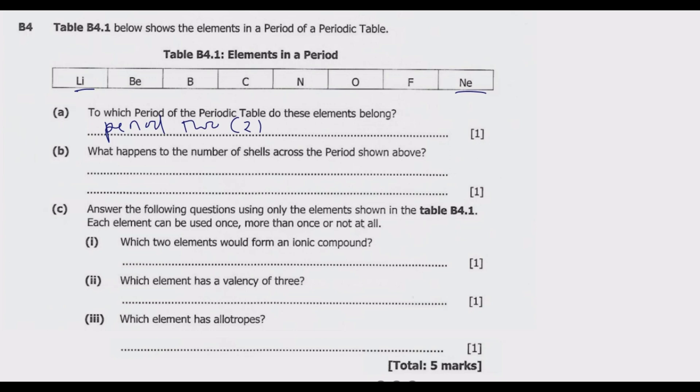Then part B: what happens to the number of shells across the period shown above? The number of shells determines the period in which a given element belongs. So in this case, the number of shells is constant. That is to say, they are neither increasing nor decreasing, because elements in the same period have the same number of shells.